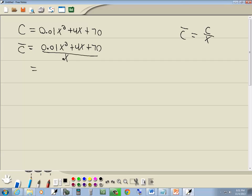So let's find that first. C bar is equal to 0.01x squared plus 4x plus 70, all over x. Now since we've got a single term down in the denominator, we'll split them up into separate fractions to make the derivative easier. So we've got 0.01x squared over x plus 4x over x plus 70 over x.